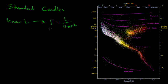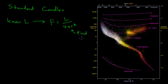So we have this flux equation, and if we know how bright the object actually is — we know the luminosity — and we can measure how much light is hitting our telescope, we can use that to find how far away the object is. So we can use that to find the distance to that object.